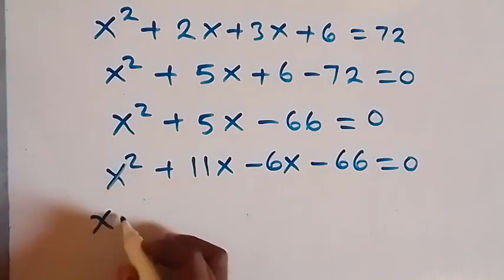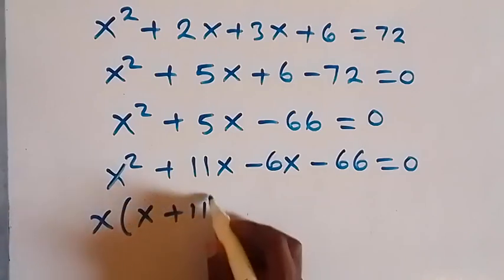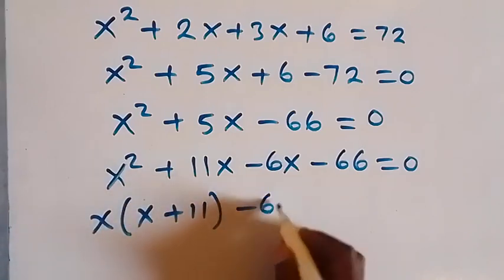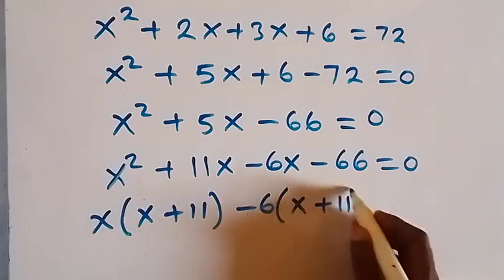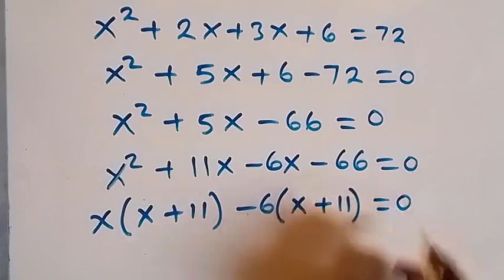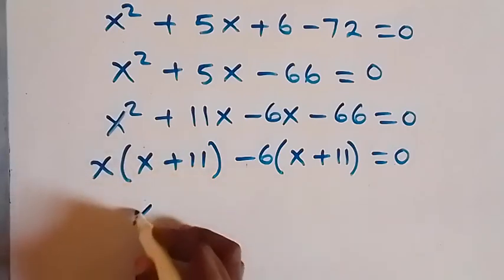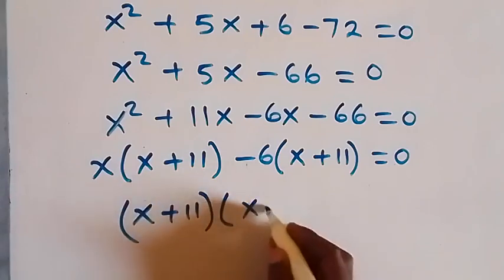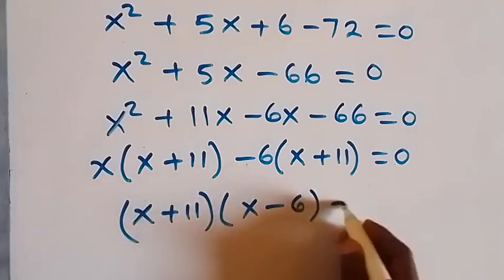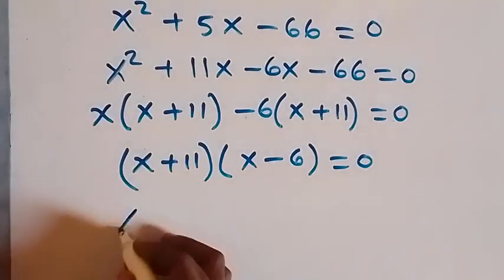We take x out as common, giving us x times x plus 11. Minus is common in the remaining terms, giving us minus one times x plus 11. So x plus 11 is common, giving us x plus 11 times x minus 6 equals zero